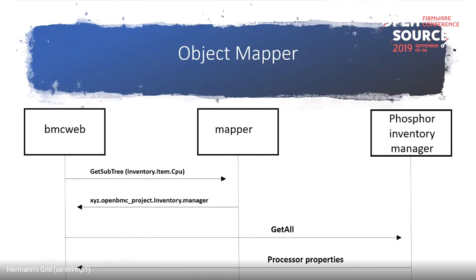OpenBMC is a collection of microservices that talk to each other through D-Bus. Which microservices different companies use varies — for example, IBM uses inventory manager while Intel uses entity manager. The object mapper is used to discover the service that implements a certain interface or a certain object path. BMC Web will first call the mapper to find the service that implements a certain interface.